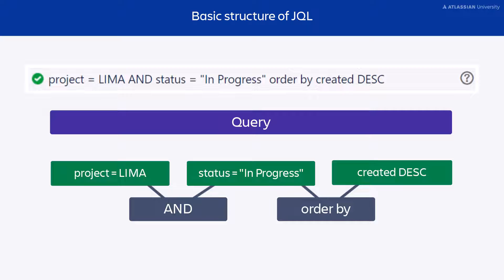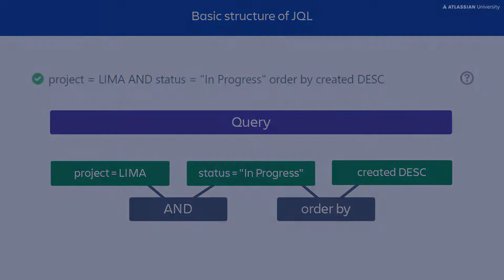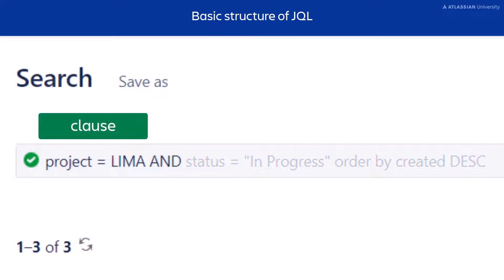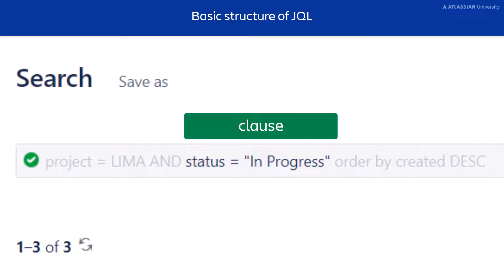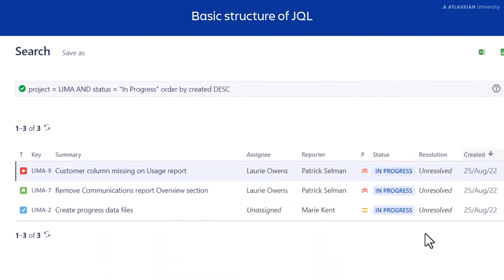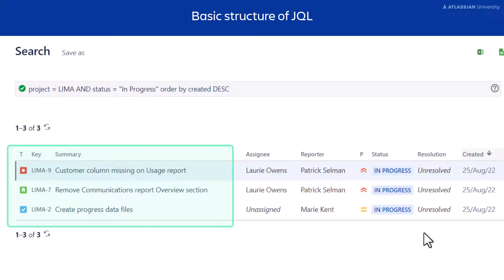Let's go back to our query from earlier and apply this new knowledge. Here's the first clause: the field is Project, the operator is the equal sign, and the value is Lima. The keyword AND allows us to connect this clause with another. The next clause's field is Status, its operator is the equal sign, and the value is In Progress. This query tells Jira to show issues in the Lima project that have a status of In Progress, and to order these issues by their created date in descending order.